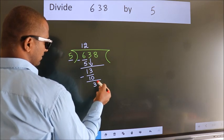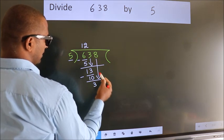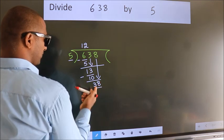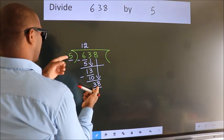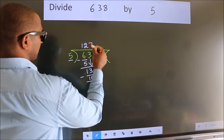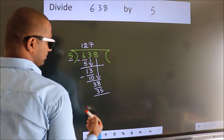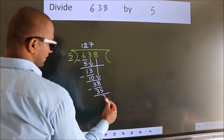After this, bring down the beside number. So 8 down. So 38. A number close to 38 in the 5 table is 5 sevens, 35. Now we subtract. We get 3.